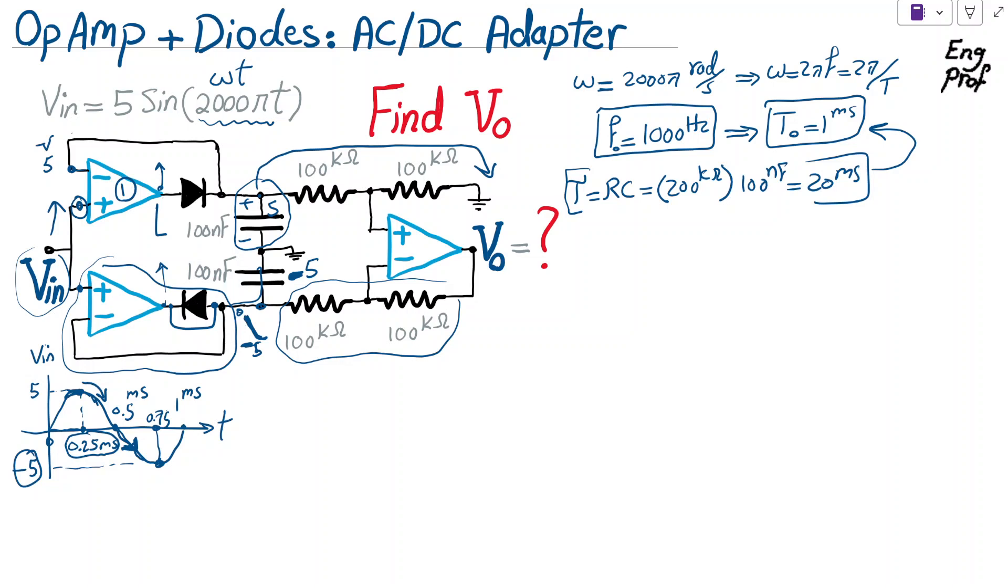And again, because after we cross 0.75 millisecond, when input signals start dropping, start increasing from negative 5 toward less negative values, then, as a result, since the negative terminal of this op-amp remains at negative 5, and positive terminal starts dropping, it starts increasing value-wise, then this op-amp jumps to positive value peak, and this diode shuts down. And therefore, as a result, what I'm trying to say is, after going through the first period of input signal, what happens is, both the cap, the top cap, gets charged to plus 5, and the bottom cap gets to charge to negative 5.